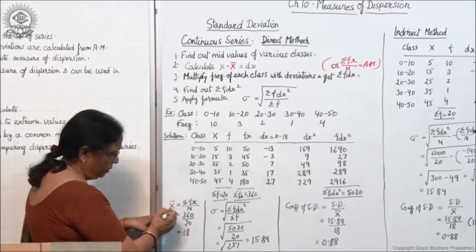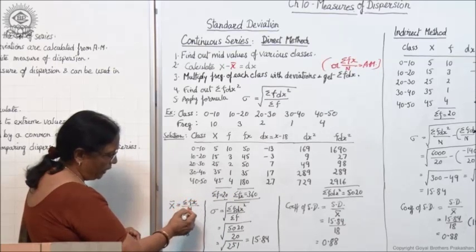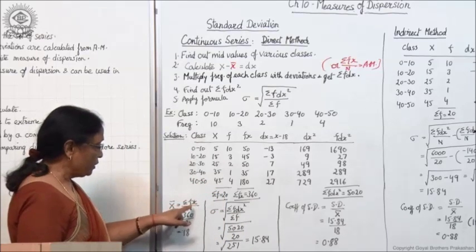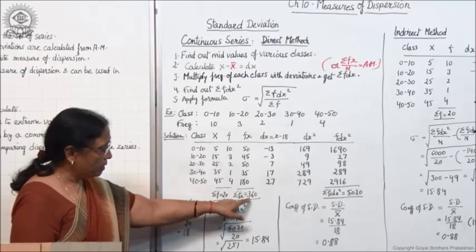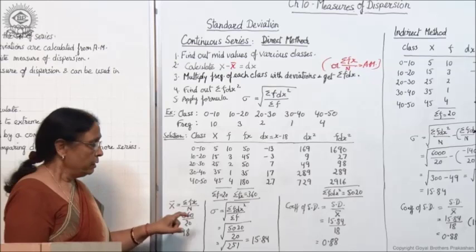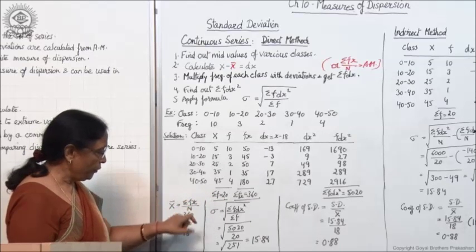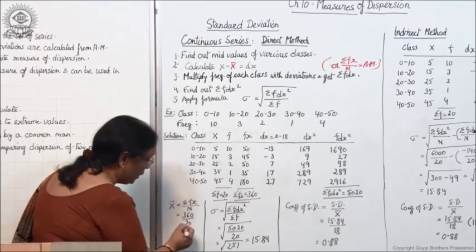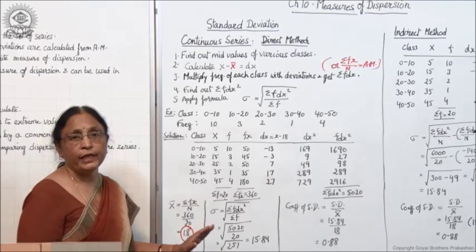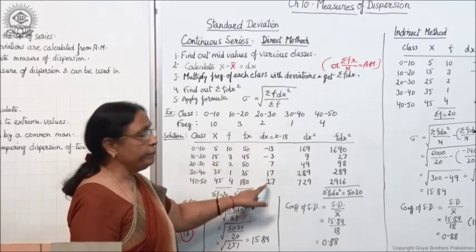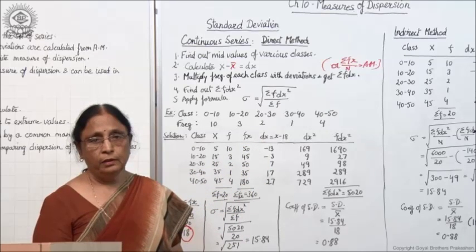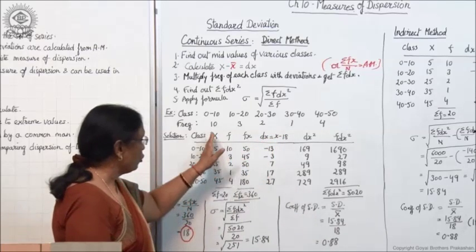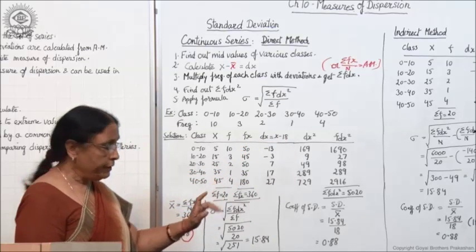Now, first calculate the mean. x̄ equals Σfx upon n — you know the formula for arithmetic mean. Σfx is 360, and n is the total of frequency, which is 20. So x̄ equals 18. This is the actual mean, and after calculating the actual mean, you have to take out the deviations from the actual mean.